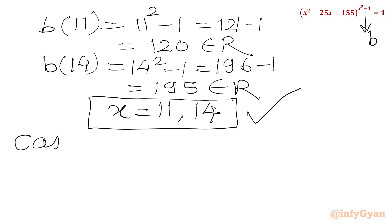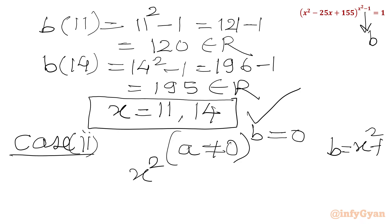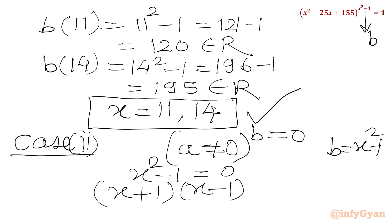Now we will consider Case 2: the base cannot be 0 but the power should be 0. So b(x) equals x squared minus 1, and we set this equal to 0. We write x squared minus 1 equal to 0, or (x plus 1)(x minus 1) equal to 0 using the difference of squares identity. From here we get x equal to plus or minus 1.